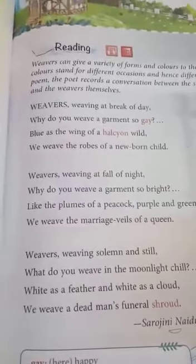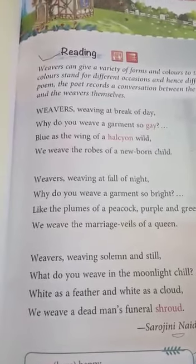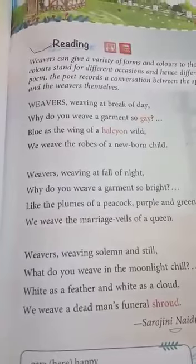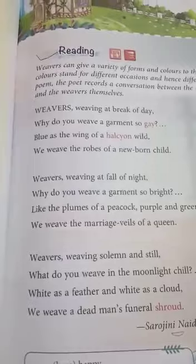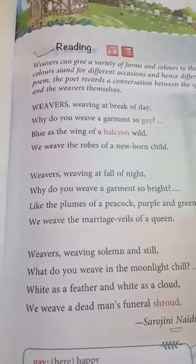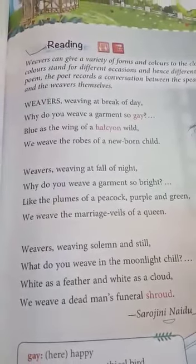So here the poet meets the weavers again. 'Fall of night' refers to the evening or dusk time when the sun has set — the evening time when the day is ending and the night is beginning, when the sun sets and darkness comes over. During this time most marriages take place. So we see the transition from morning to evening, and the transition of color, emotion, and people.